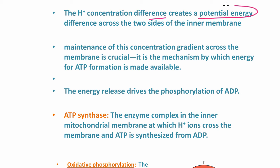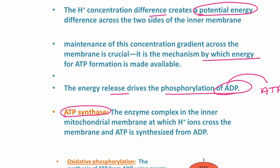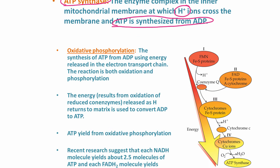The hydrogen ion concentration difference creates a potential energy difference across the two sides of the inner membrane. It is very important that this concentration gradient be maintained because it is the mechanism by which energy for ATP formation is made available. The energy release drives the phosphorylation of ADP to ATP. ATP synthase is the enzyme complex in the inner mitochondrial membrane through which hydrogen ions cross to allow ATP synthesis.